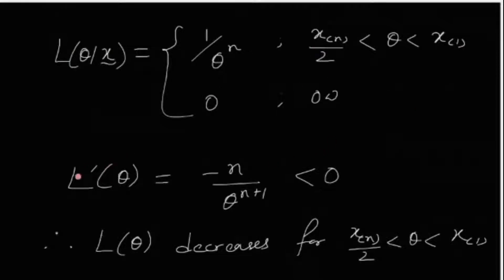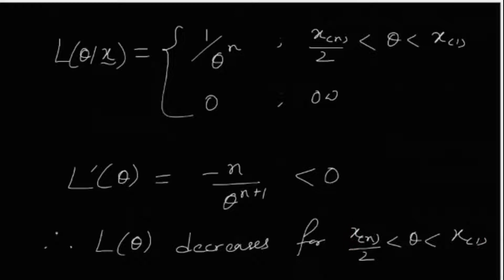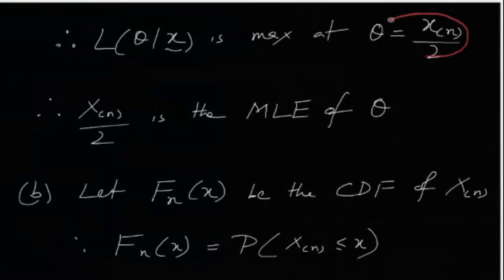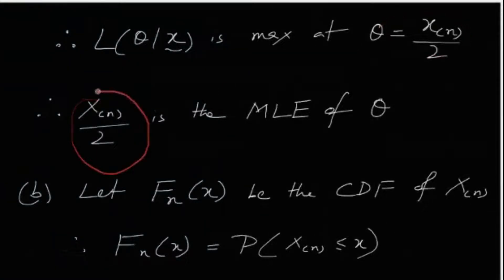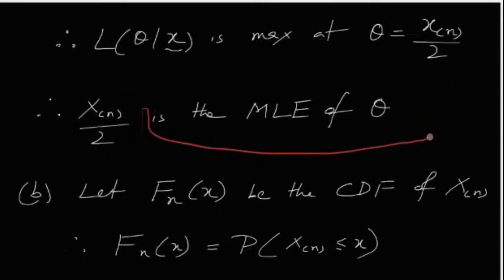The first derivative L'(θ) = −n/θ^(n+1), which is obviously negative. Therefore, the likelihood function L(θ) is strictly decreasing over the interval (X_(n)/2, X_(1)). Since it is strictly decreasing, the maximum value is attained at the left endpoint θ = X_(n)/2. Therefore, X_(n)/2 is the maximum likelihood estimator of θ.